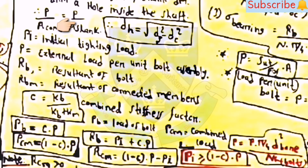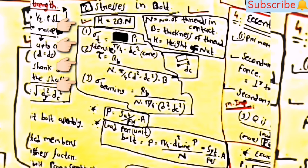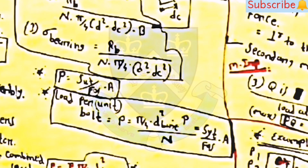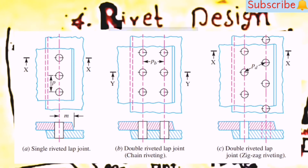sigma_t = P_i/(π/4·d_c²). tau = R_L/(n·(π/4)·(d² − d_c²)·beta). sigma_bearing = R_b/(n·(π/4)·(d² − d_c²)). P = (S_ut/FOS)·A and load per unit bolt = P = (S_yt/FOS)·A. The last topic is rivet design. Types of riveted joints: single riveted lap joint, double riveted lap joint, single riveted single-strap butt joint, and single riveted double-shear double-strap butt joint.